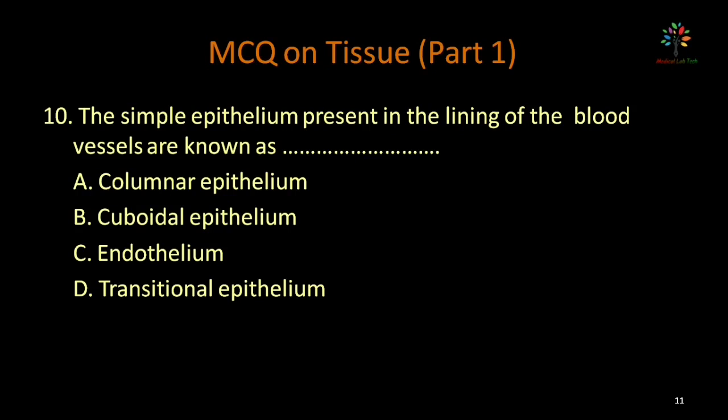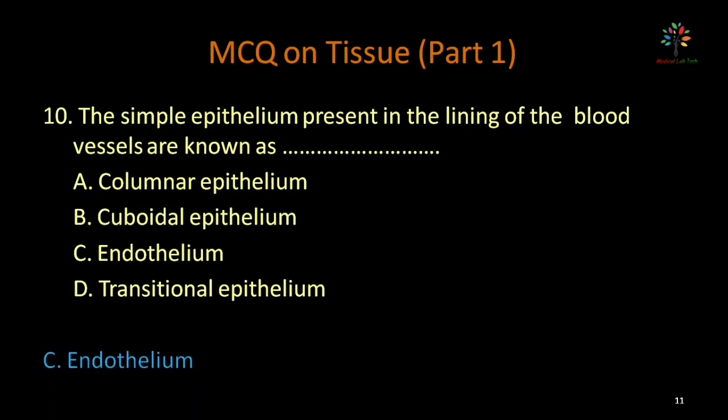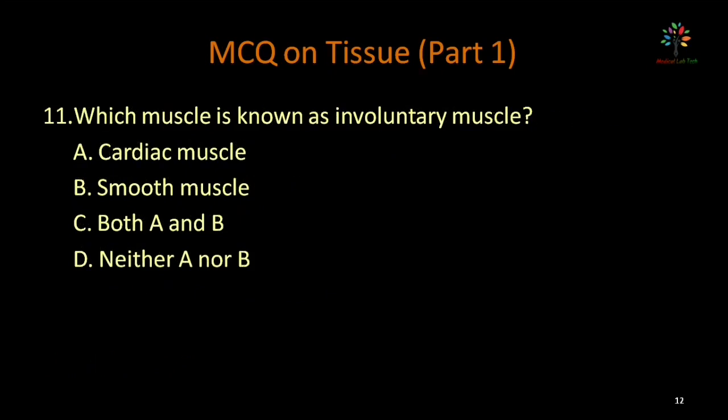The simple epithelium present in the lining of blood vessels is known as — columnar epithelium, cuboidal epithelium, endothelium, or transitional epithelium. The lining inside blood vessels is simple squamous epithelium, known as endothelium. Correct option is endothelium.